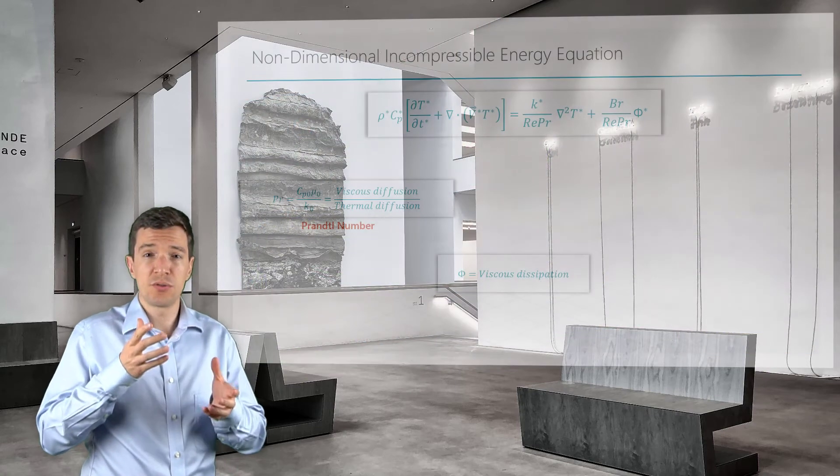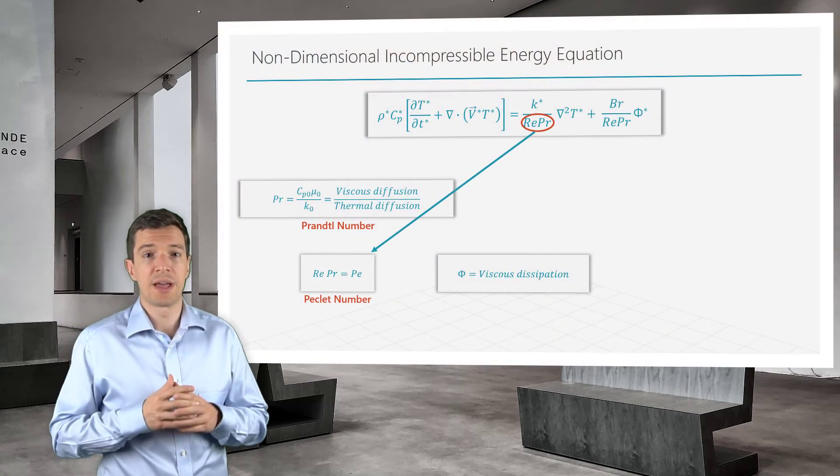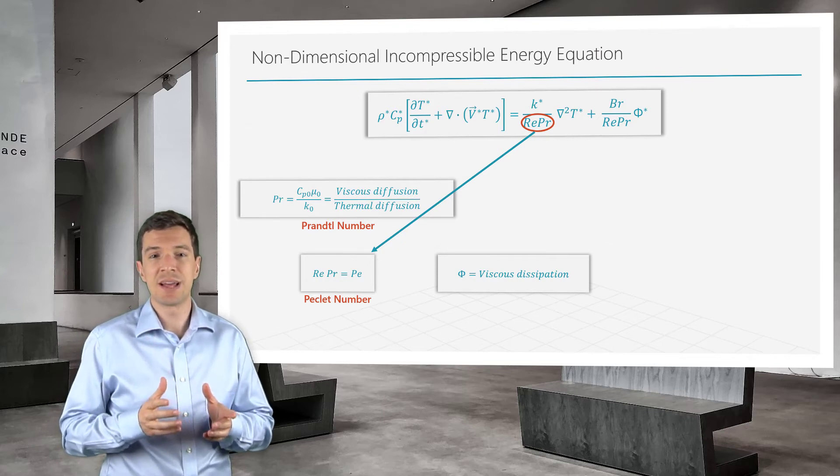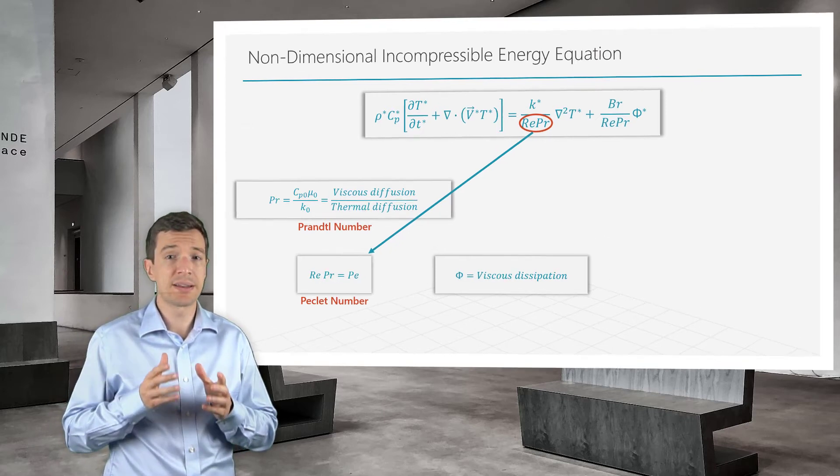Note that the product of the Reynolds number and the Prandtl number is sometimes defined as the Péclet number.